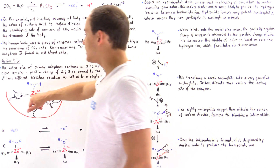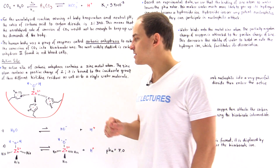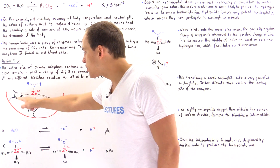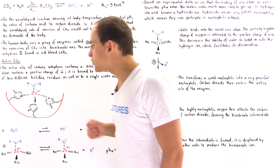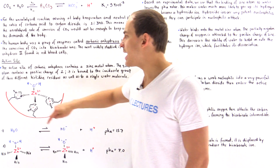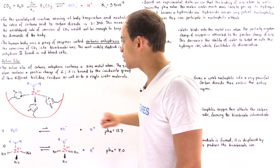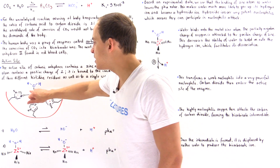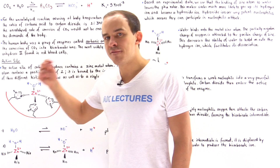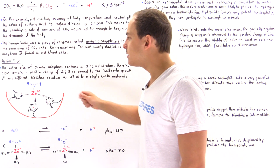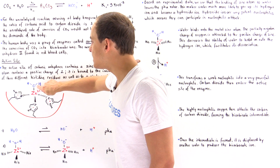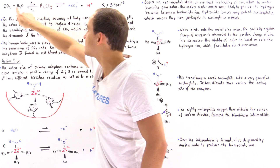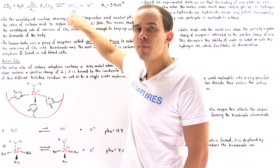This zinc atom has a charge of +2 and is bound to four different groups. Three of these groups are ring structures that are part of the side chains of histidine residues — histidine residues 1, 2, and 3 — bound to the zinc as shown. The final group is a water molecule, and this is the same water molecule that will react with carbon dioxide to ultimately produce the bicarbonate.